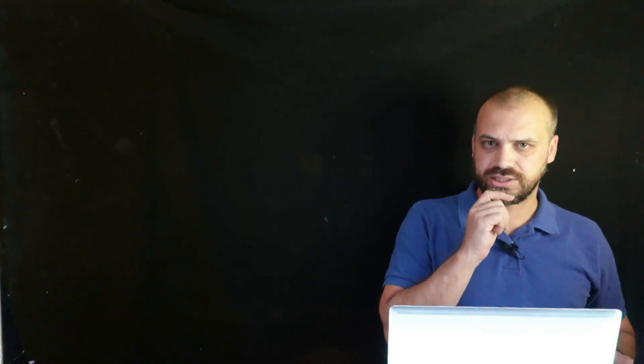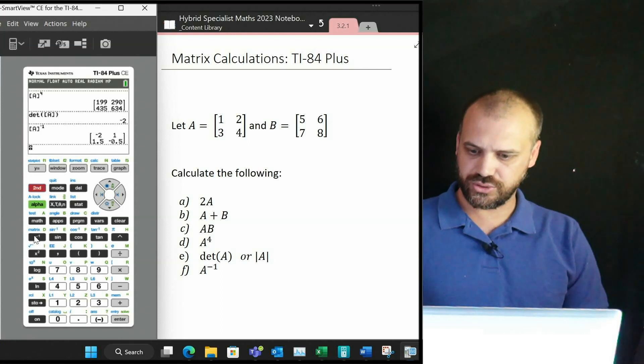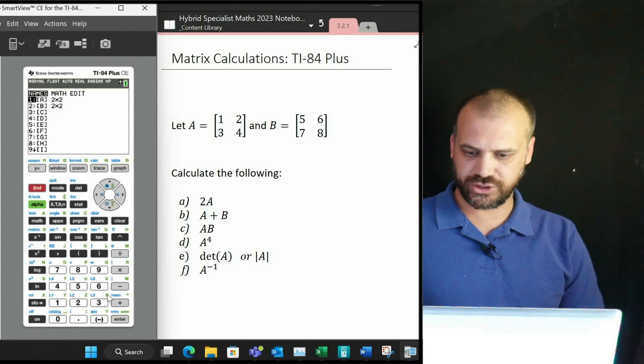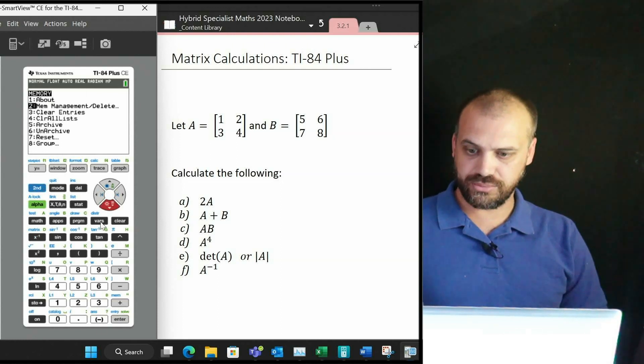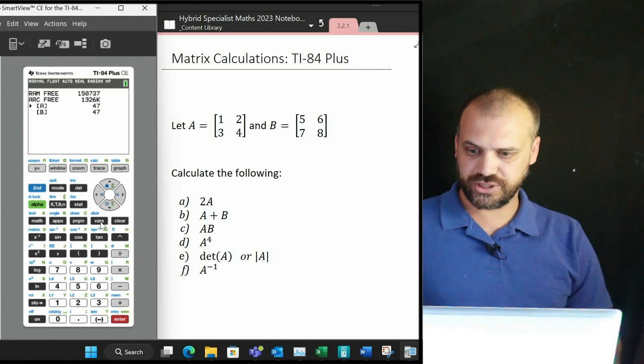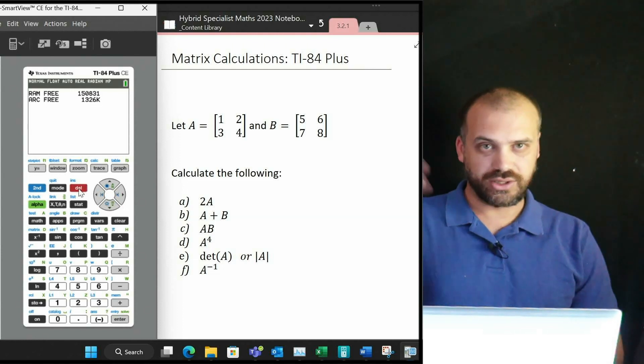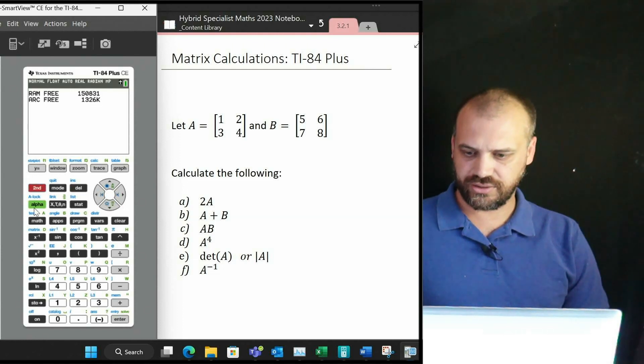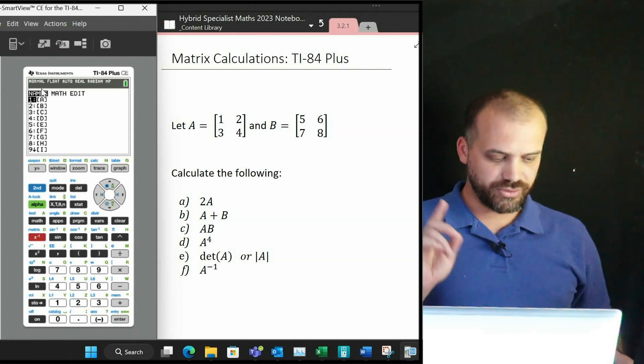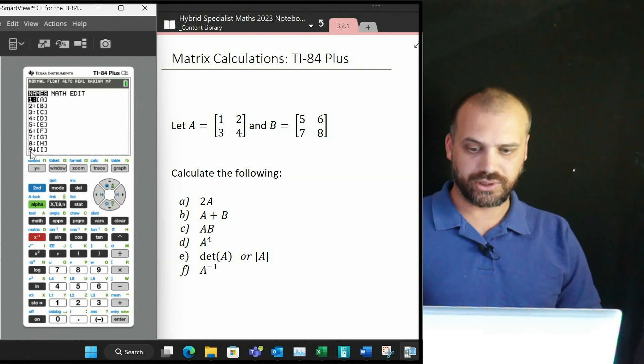Probably one more thing I need to tell you about: if you eventually want to clear this thing out, the way to do it is to go second function memory, go into memory management/delete, choose matrix, and then just click delete on the ones you don't want anymore, and you can see they'll go away. Second function matrix, and you can see they're completely cleared. All right, that is it—matrix calculations on the TI-84 Plus.